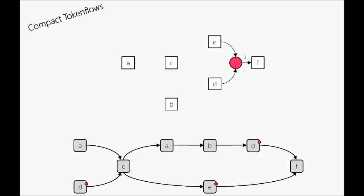Now what about the pink place? All events labeled e and d are able to produce a token, and the event labeled f needs to receive three tokens. The first d pushes its token along this path of relations to f, e pushes its token to f, and the second d also pushes its token to f. So d, d, and e each produce one token, the token flows along the arcs of the relation until reaching f, and f is able to consume all three. This is enabled for the pink place.